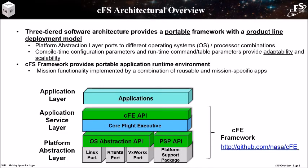In this tutorial, we're going to take a look at the CFS architecture. Here's a look at the flight software architecture that's orbiting the moon. It has three layers that allow applications to be ported across different hardware processor and operating system combinations. The bottom layer is the platform abstraction layer, and it has two parts: the operating system abstraction and the platform support package. Each of these components has an application programmer interface, or API.